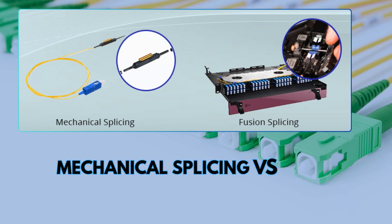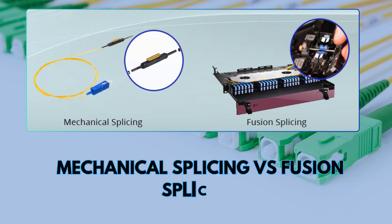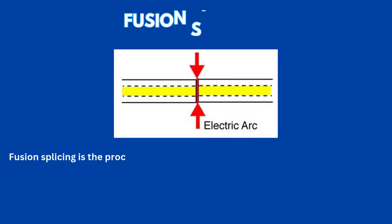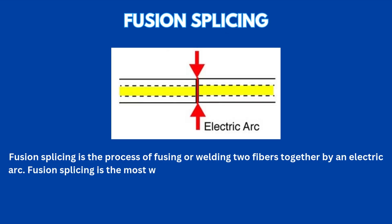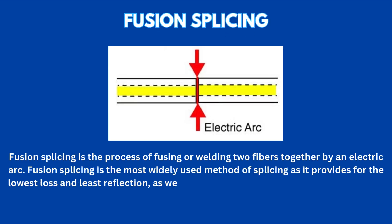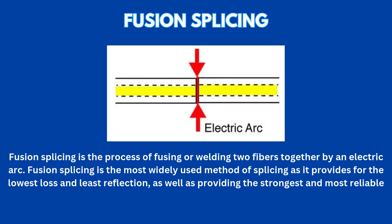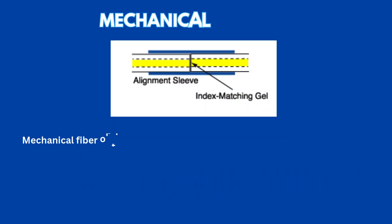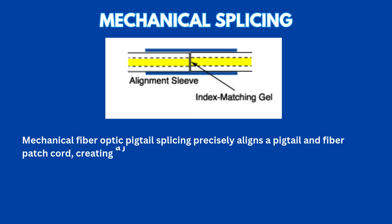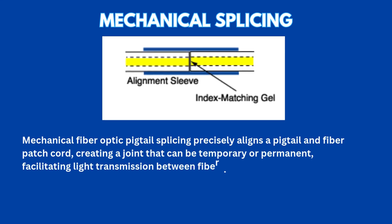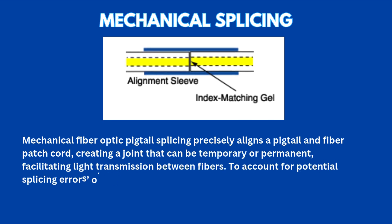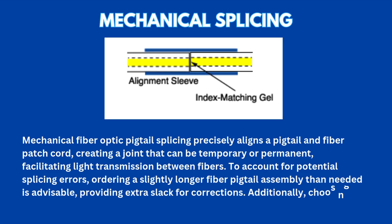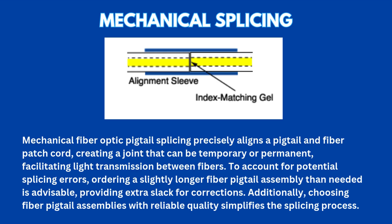Mechanical splicing versus fusion splicing: fusion splicing is the process of fusing or welding two fibers together using an electric arc. Mechanical fiber optic pigtail splicing precisely aligns a pigtail and fiber patch cord, creating a joint that can be temporary or permanent, facilitating light transmission between fibers.